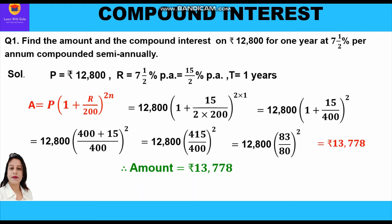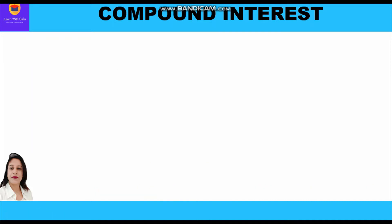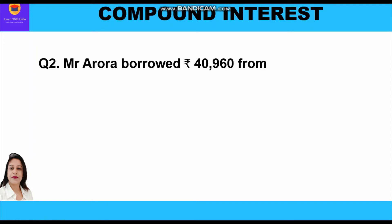Now we find compound interest as the difference between amount and principal: CI = A − P = 13,778 − 12,800 = ₹978. So the amount is ₹13,778 and compound interest is ₹978.